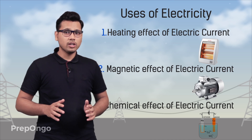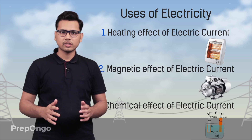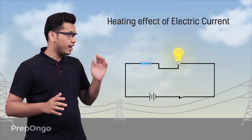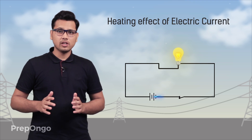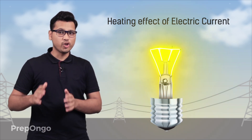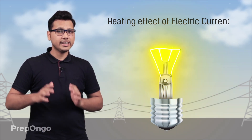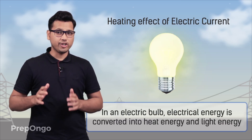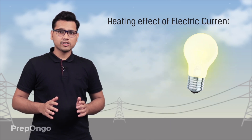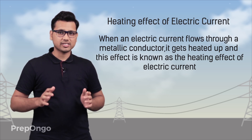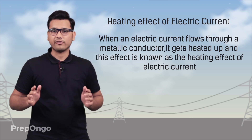Here we will be discussing the heating effect of electric current. There are many devices which convert electrical energy into heat energy. When an electric current passes through an electric bulb, heat is produced. The filament of the bulb gets heated up and then glows to produce light. So basically in an electric bulb, electrical energy gets converted into heat energy and light energy. This effect — the heating up of a metallic conductor when electric current is passed through it — is known as the heating effect of electric current.